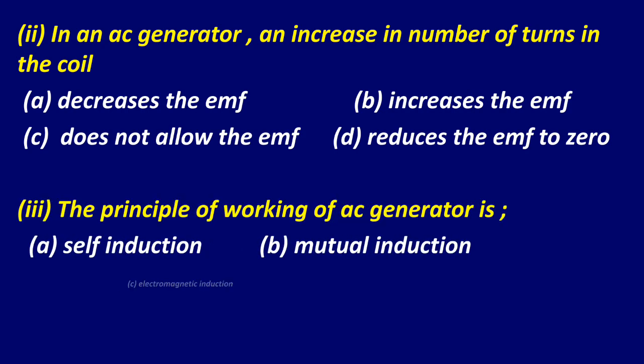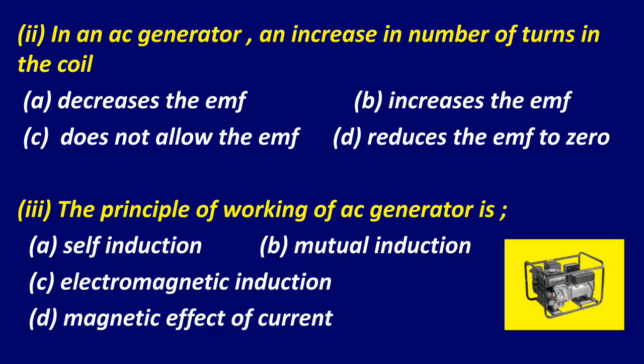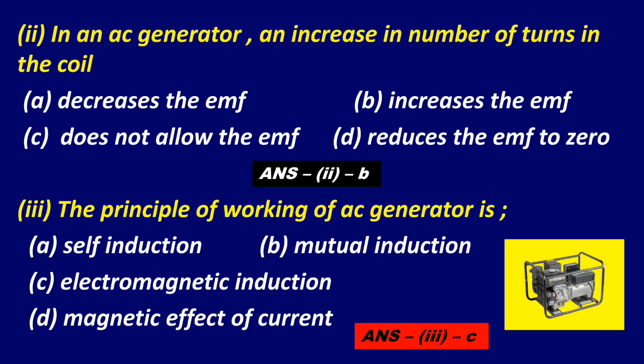Question 2: In an AC generator, an increase in number of turns in the coil — Option A: decreases the EMF, Option B: increases the EMF, Option C: does not affect the EMF, Option D: reduces the EMF to zero. The correct answer is Option B — increases the EMF. Question 3: The principle of working of an AC generator is — Option A: self-induction, Option B: mutual induction, Option C: electromagnetic induction, Option D: magnetic effect of current. The correct answer is Option C — electromagnetic induction.